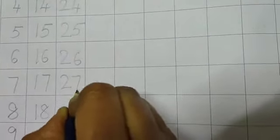After 20, 21. 2, 1, 21. 2, 2, 22. 2, 3, 23. 24, 25, 26, 27, 28, 29, 30. After 20, 30.